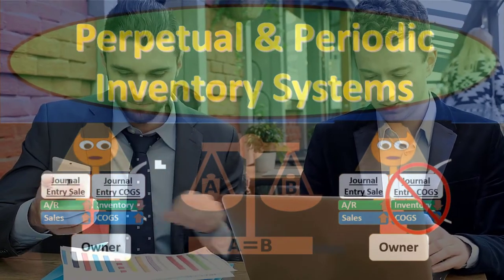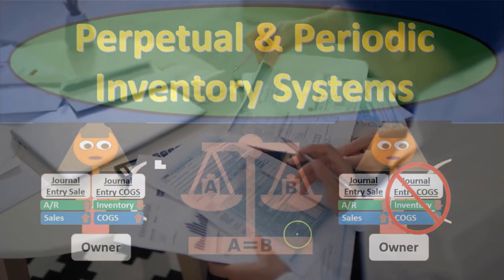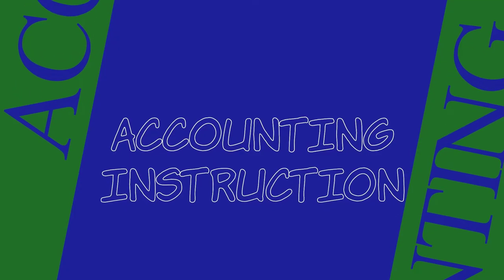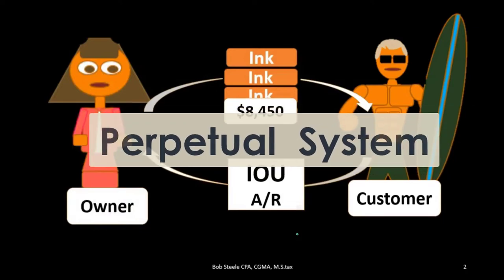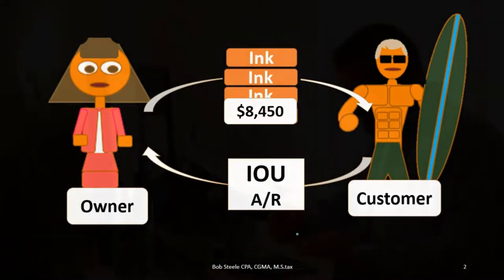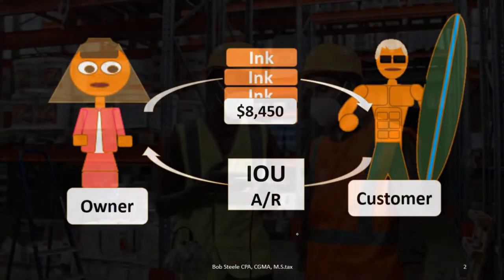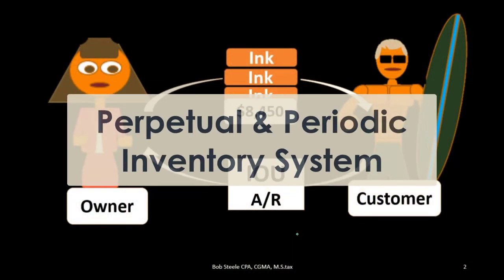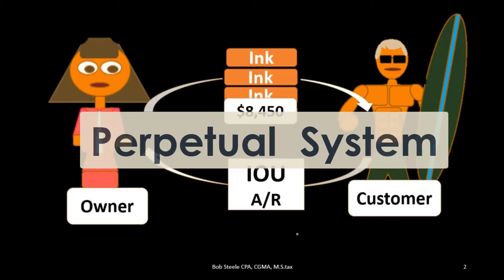In this presentation we will compare and contrast the perpetual and periodic inventory systems as we track inventory through the accounting process. First we're going to look at the perpetual system — the system we typically think of when recording transactions that deal with inventory. If a transaction doesn't specify periodic or perpetual, you probably want to default to the perpetual system.